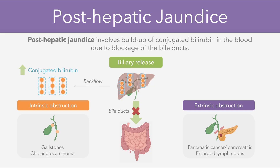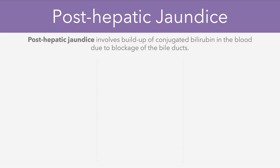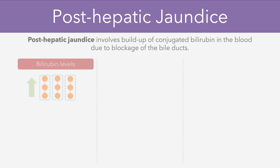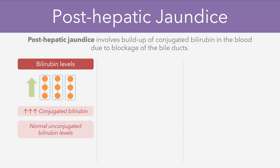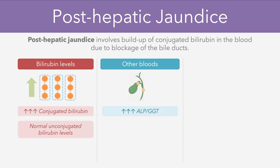In terms of the key features of a post-hepatic jaundice, the bilirubin levels will involve an isolated rise in the conjugated bilirubin type, while the unconjugated bilirubin will remain normal, because the molecules have already passed through the liver so there's no issue with the conjugation itself. There might also be some other blood test abnormalities due to the blockage of the bile ducts, for example a significant rise in the ALP and GGT enzymes which are found in the cells lining the bile duct.